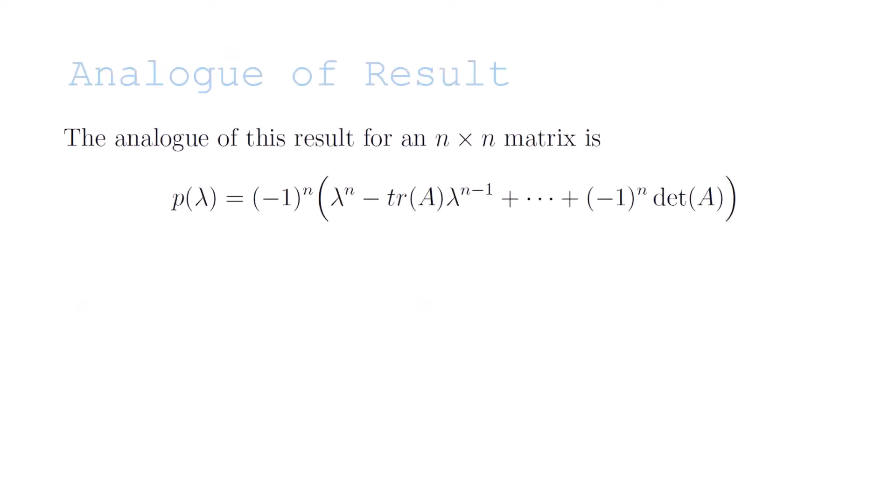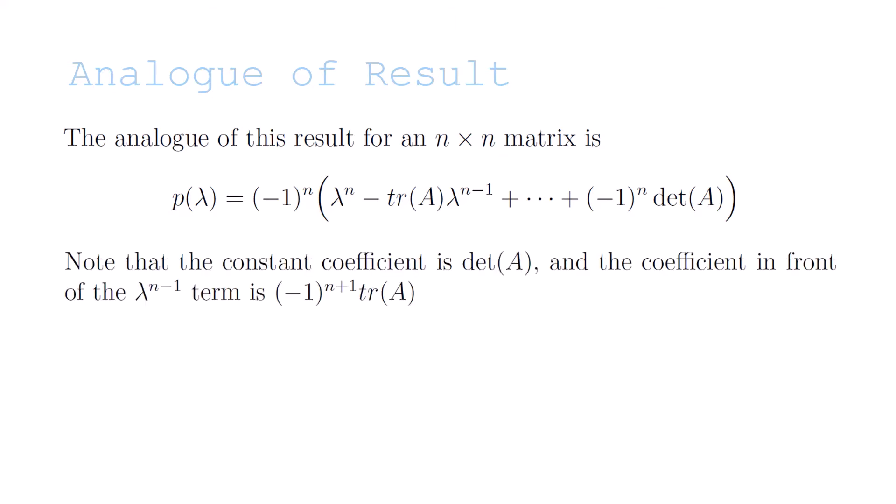The analog of this result for an N by N matrix is that P of lambda equals negative 1 to the power of N times lambda to the power of N minus the trace of A times lambda to the N minus 1, plus dot dot dot, plus negative 1 to the power of N times the determinant of A. Note that the constant coefficient of the characteristic polynomial is still the determinant of A, and the coefficient in front of the lambda to the N minus 1 term is negative 1 to the power of N plus 1 times the trace of A.